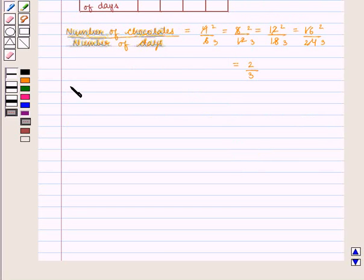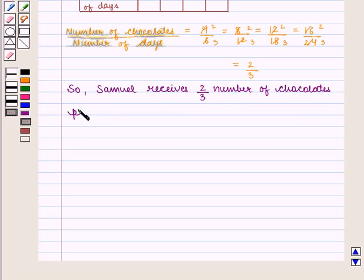So Samuel receives 2/3 number of chocolates per day, and we see that 2/3 is the constant of proportionality.